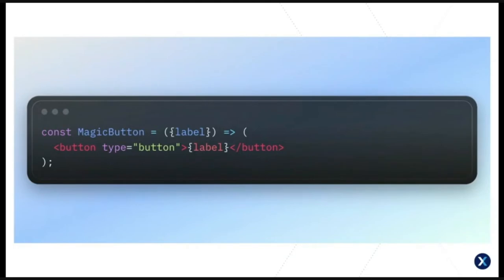I learned that there were essentially two types of components. The first is a functional component — a simple example which is basically just something with a render method. For me this felt similar to a Twig template: occasionally there'd be a small amount of logic in there, but usually it was just something to wrap the render. These components are quite limited — they can only take props, and if you wanted to access lifecycle events or state, you needed to use a class component.